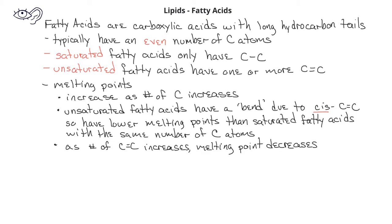Omega fatty acids are unsaturated fatty acids in which the double bond begins at a certain number indicated in the name of the omega fatty acid. We start counting from the CH3 end of the fatty acid. We use the Greek letter omega because that's the last letter of the Greek alphabet. So if we say we have an omega-3 fatty acid, that means that the first double bond begins at the third carbon from the end of the fatty acid chain.